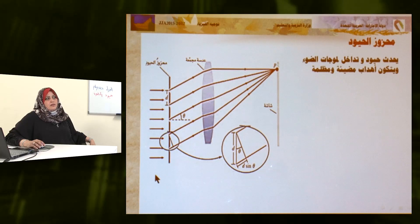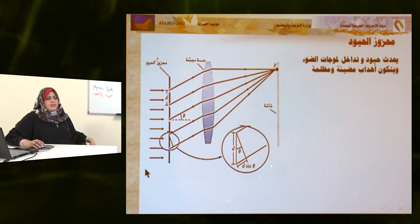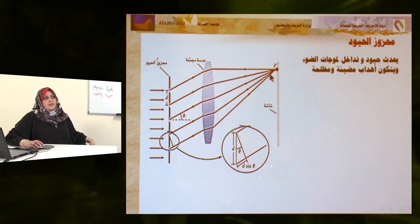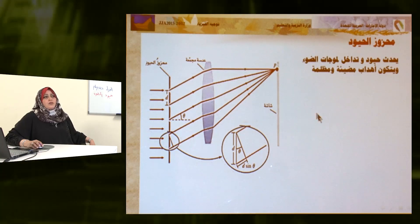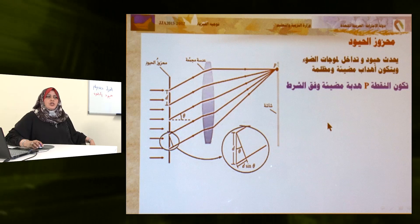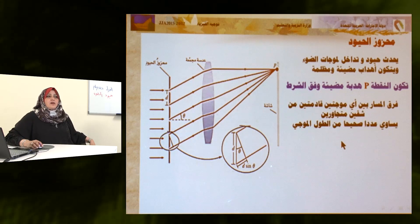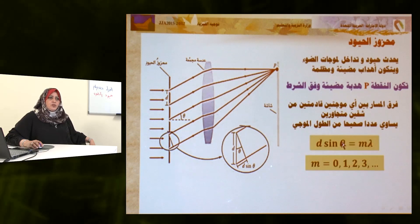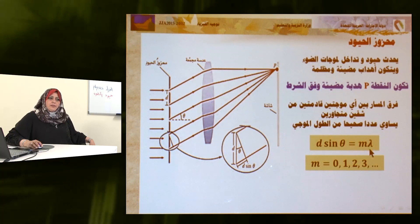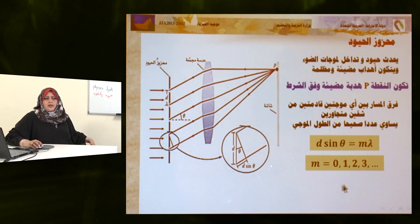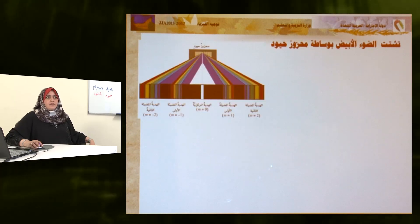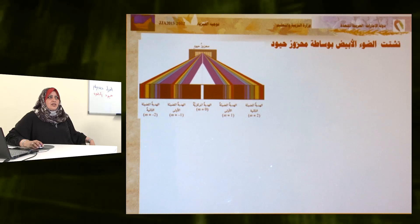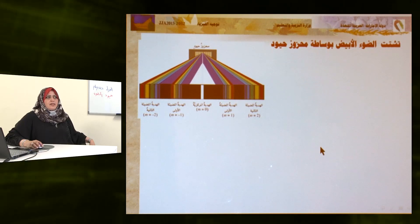عند سقوط موجات متوازية على محزوز الحيود تحيد عن مصارها وتتجمع بواسطة عدسة مجمعة لتلتقي على الشاشة عند النقطة B. تكون النقطة B هدباً مضيئاً وفق الشرط: فرق المسار بين موجتين قادمتين من شقين متجاورين يساوي عدداً صحيحاً من الأطوال الموجية: d·sinθ = mλ، حيث m تمثل الرتبة وهي عدد صحيح 0، 1، 2، 3.